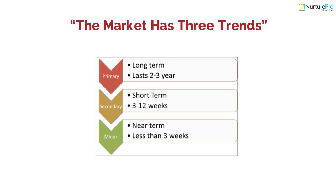According to Dow, the primary market trend can last for more than a year. A secondary trend is a short-term market movement which deviates from the primary trend. This trend usually lasts three weeks to three months. The minor trend is the near-term trend and this market movement lasts less than three weeks.